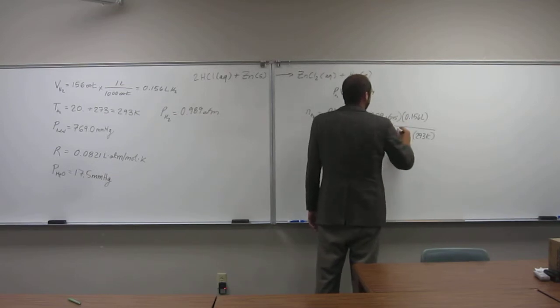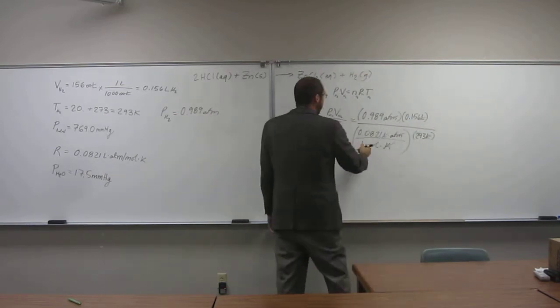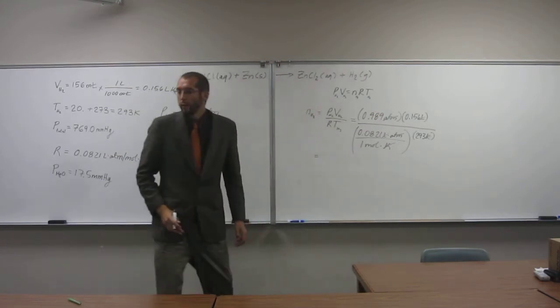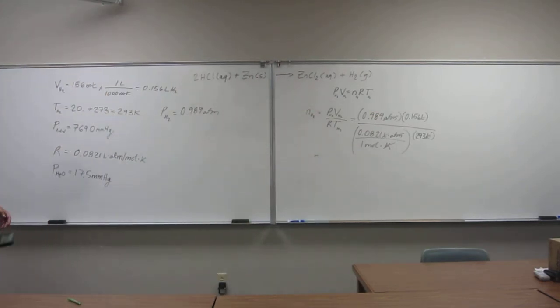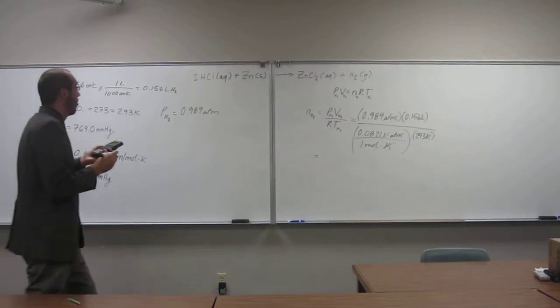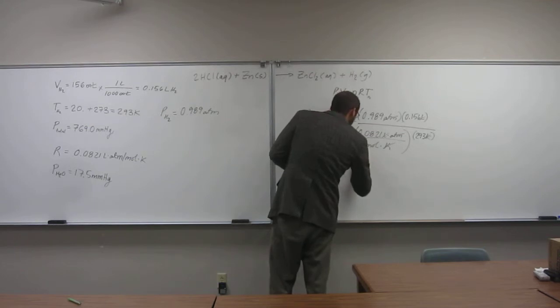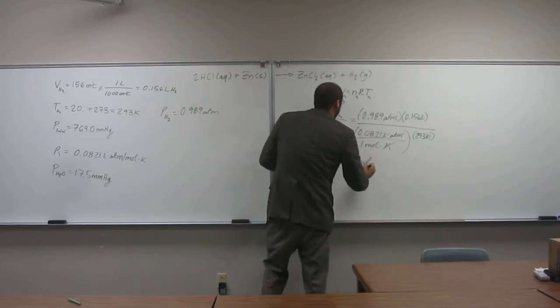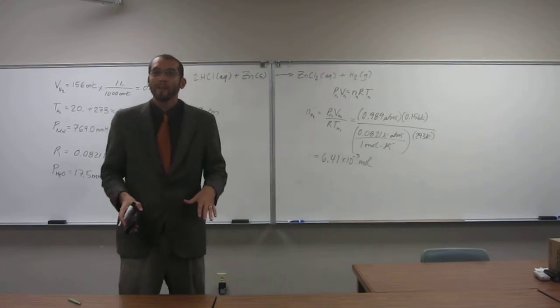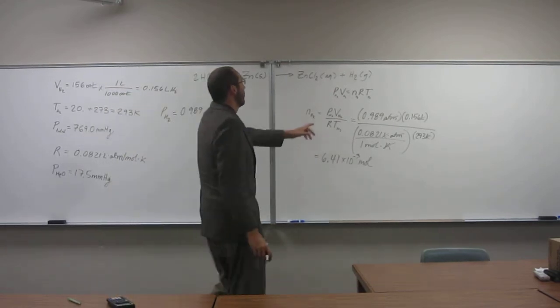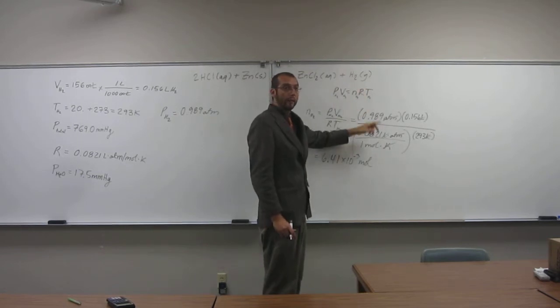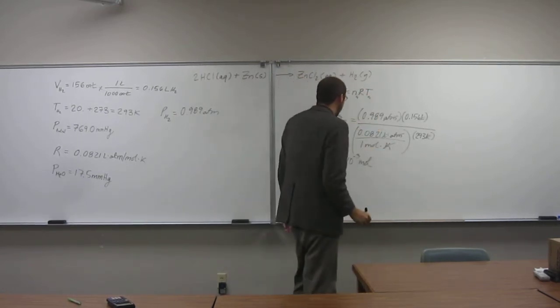Let's calculate that one together. The number of moles I get is 6.41 times 10 to the negative 3 moles, but it doesn't want moles, it wants the mass of hydrogen. Remember, hydrogen is H2, it's diatomic. It's not just one H like on the periodic table.